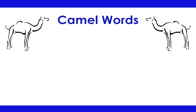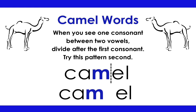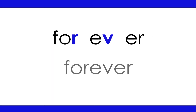Camel Words: When you see one consonant between two vowels, divide after the first consonant. Try this pattern second. Camel: Cam-el. Everything: Ev-ery-thing. Forever: For-ev-er.